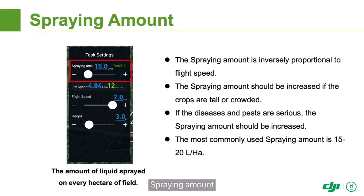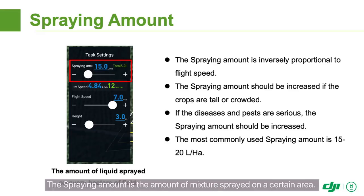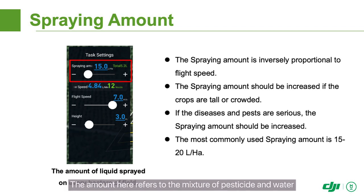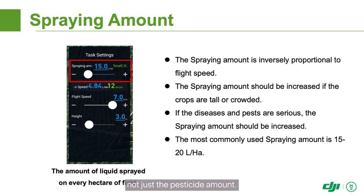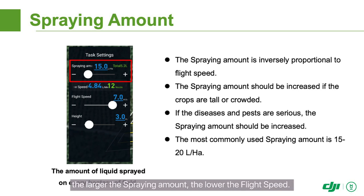The spraying amount is the amount of mixture sprayed on a certain area. The amount here refers to the mixture of pesticide and water, not just the pesticide amount. As the drone has a maximum spraying speed, the larger the spraying amount, the lower the flight speed.